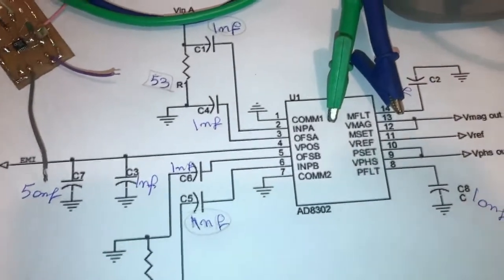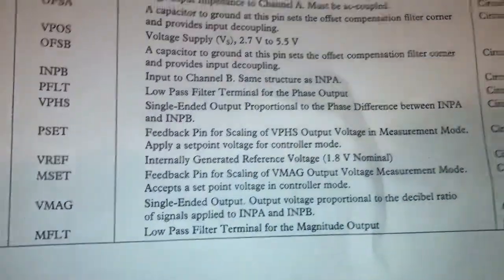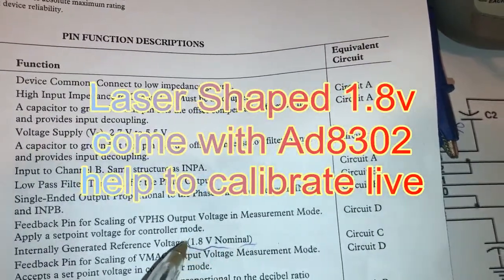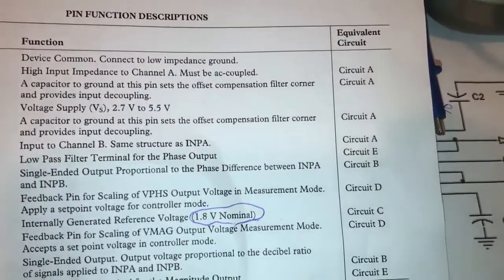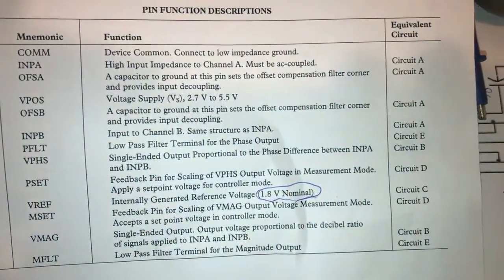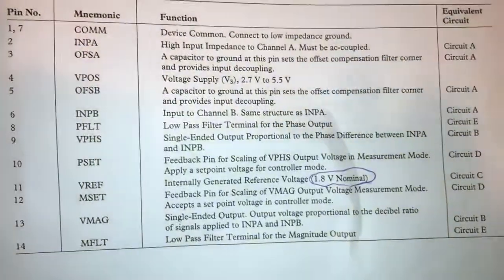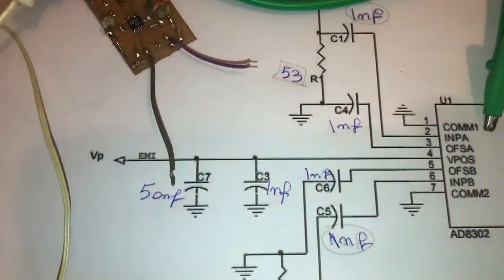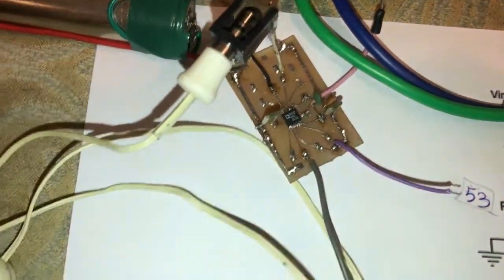At first I should say the AD8302 comes with a special feature and this one is voltage reference 1.8 volts. So it means for the calculations in case of micro connection or multimeter connection, it will help too much and all the time we have fixed stable reference voltage.